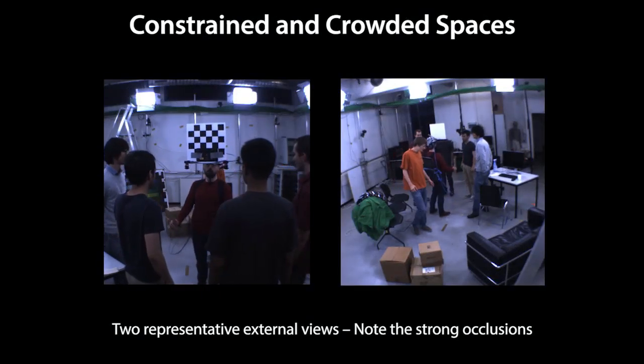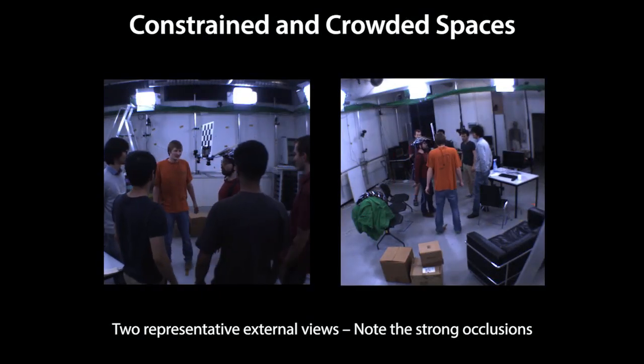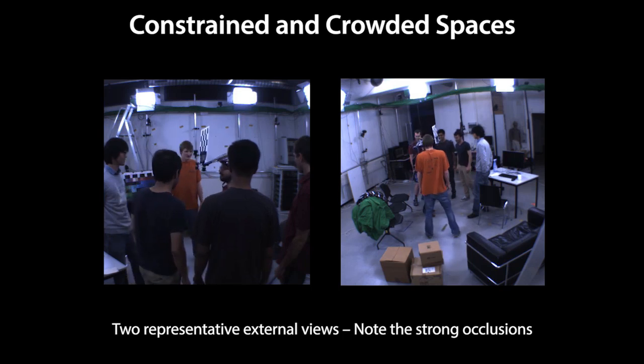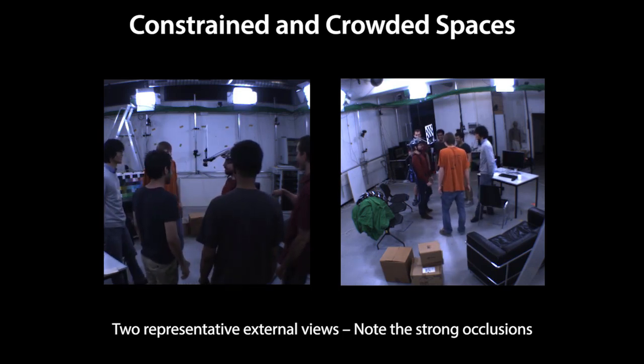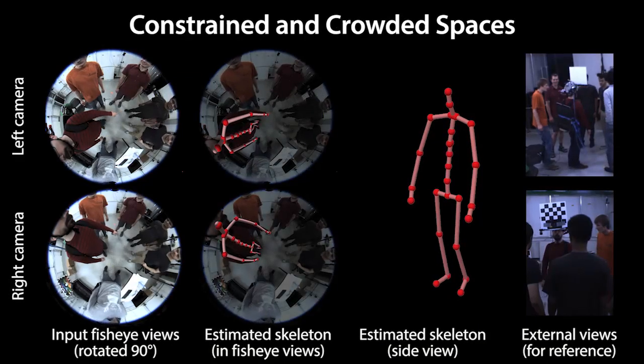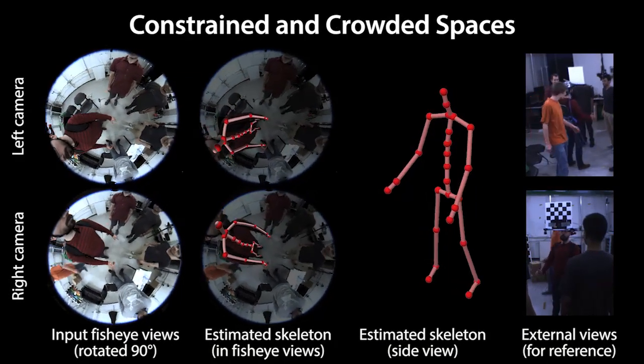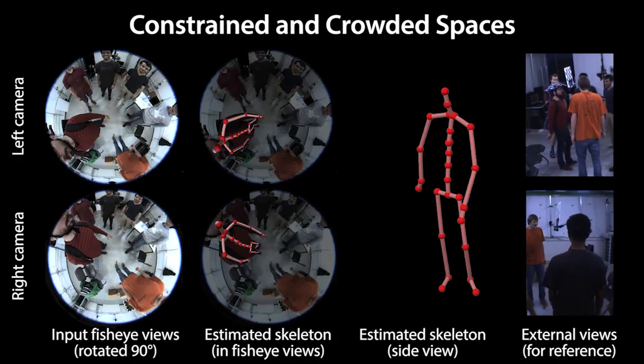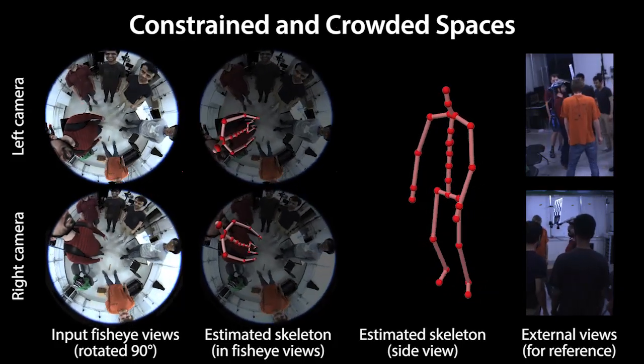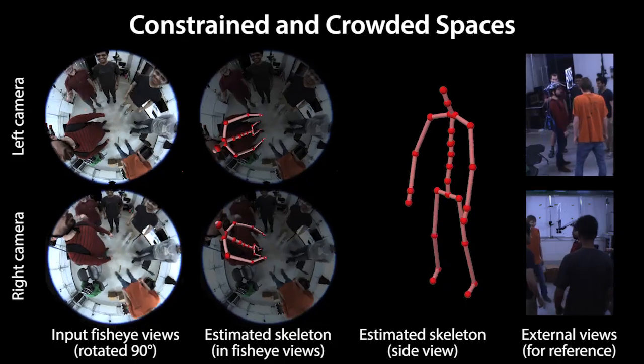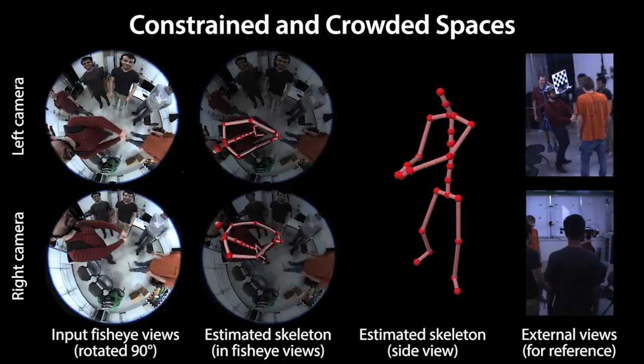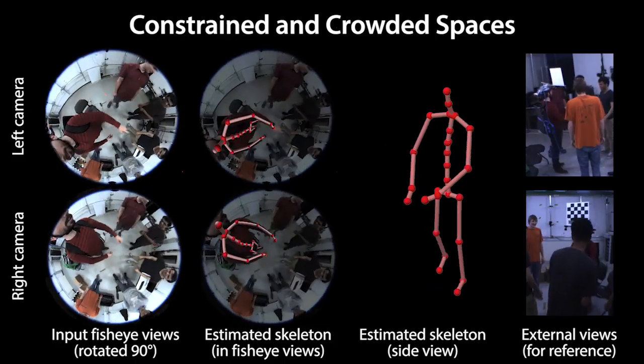Our EgoCap approach enables motion capture of the person in the center who is occluded by many bystanders. Traditional outside-in motion capture from external cameras, as shown here, would be close to impossible. In contrast with EgoCap, we can successfully track the entire skeleton motion. The skeleton is stabilized on the spine for visualization purposes. Note that the global position is not tracked in this example.